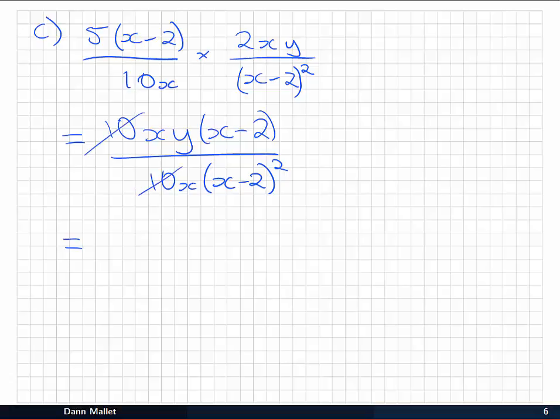Clearly we can see a ten. We've also got an x. There's no y's on the bottom. So we can't do anything with that. Then we do have a common factor of (x - 2) to the first power. So we can cancel one of those. And we're left with y on the top and (x - 2) on the bottom. And that's the product of the two fractions we started with.